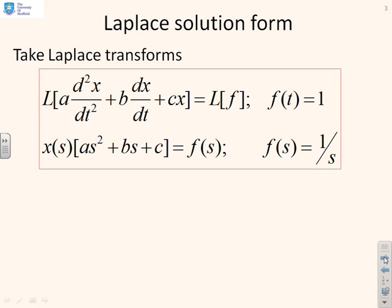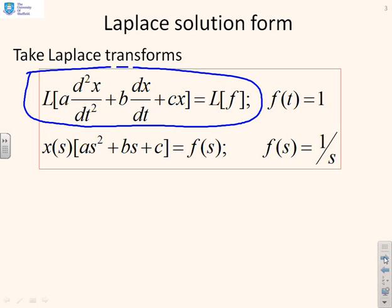A quick sketch about how you go about this. First of all, we're going to take Laplace transforms of both sides of the equation. You can see there I've put the capital L across both sides. Laplace of a d²x/dt² plus b dx/dt plus cx equals Laplace of f. And in this video, we're going to assume that f of t is a constant of 1.